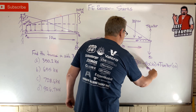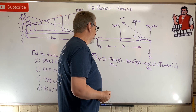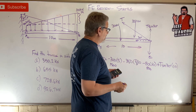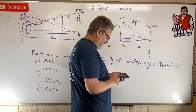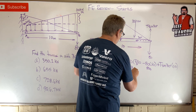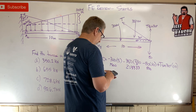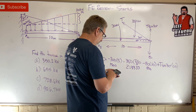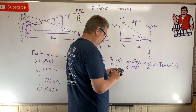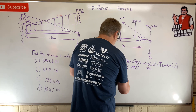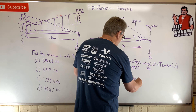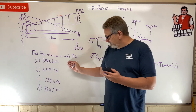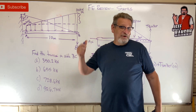That gives us 1500 and 800. Let's calculate: 350 times 10 is 3500, times 2 is 7000, divided by 3 is 2333.33. So 2333.33 plus 800 plus 1500 equals 4633, divided by 10, divided by sine 30 gives us 926.666 kilonewtons. That's how big T is. Answer D. I hope that helps — let's do another one.